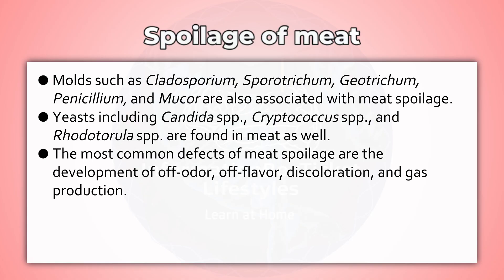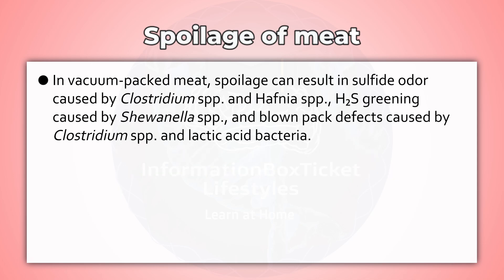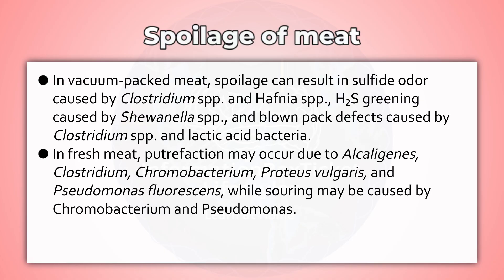The most common defects of meat spoilage are the development of off-odor, off-flavor, discoloration, and gas production. In vacuum-packed meat, spoilage can result in sulfide odor caused by Clostridium spp. and Hafnia spp., H2S greening caused by Shewanella spp., and blown-pack defects caused by Clostridium species and lactic acid bacteria.